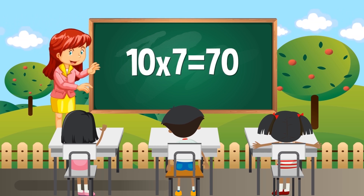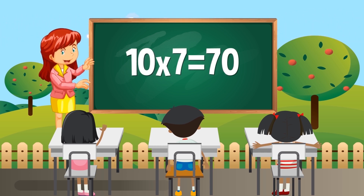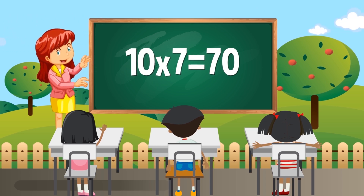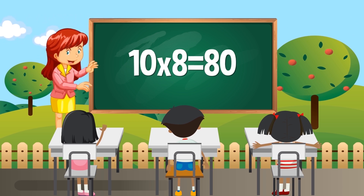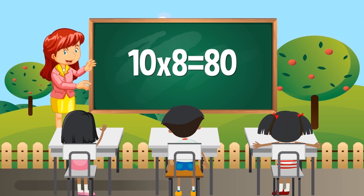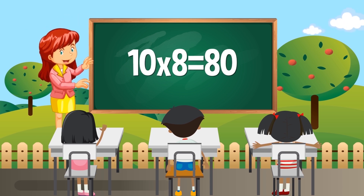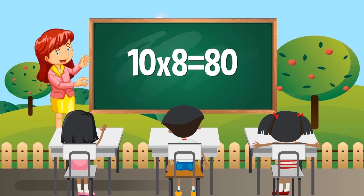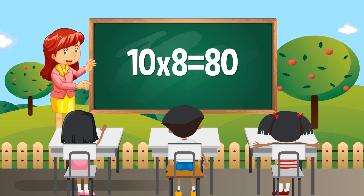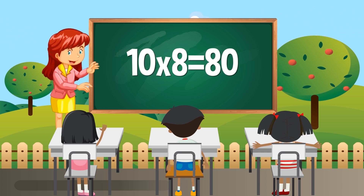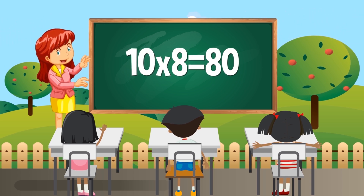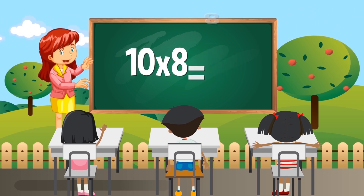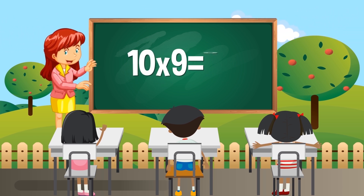Ten times seven equals seventy. Ten times eight equals eighty. Ten times nine equals ninety.